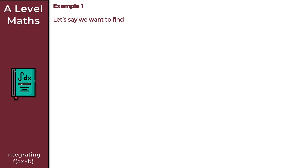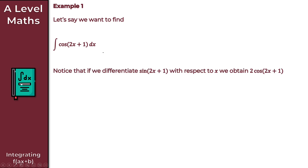Let's get started with Example 1. We want to find the integral of cos(2x + 1) with respect to x. Notice that if we differentiate sin(2x + 1) with respect to x, we obtain 2cos(2x + 1). The first question is: why are we differentiating sin(2x + 1)? Why is this relevant?